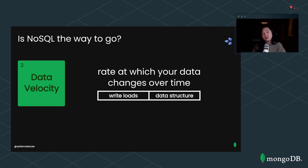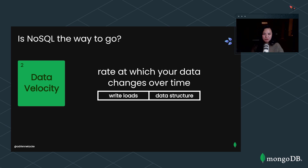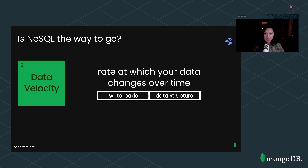A very common example: in quarter two you were asked to capture certain data points, but a year or a quarter later you found that some were much more meaningful than others. You'd want to get rid of the ones that aren't valuable — this is a common use case for changing your data schema often. NoSQL data models are much better equipped to handle that.